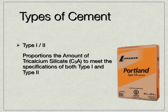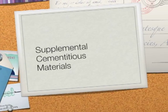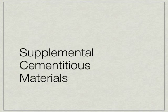A quick note before moving on: also common on the market nowadays is what is referred to as type 1/2. Type 1/2 cement proportions the amount of tricalcium aluminate, or C3A, to meet the specifications of both a type 1 and type 2. Now let's finish up this presentation with supplemental cementitious materials. Supplemental cementitious materials, or SCMs, are materials that are added to cement to enhance a particular performance of the cement.